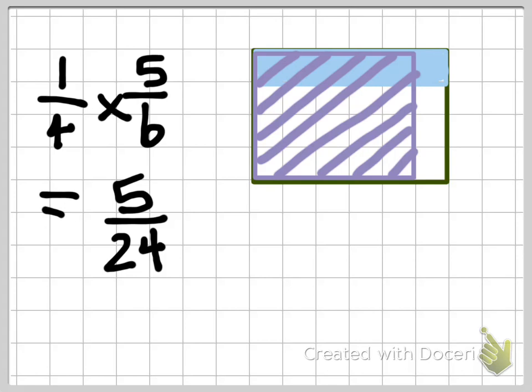Using this method, you can multiply any two fractions together and show how your answer is proven by the area model.